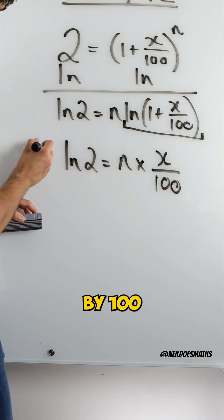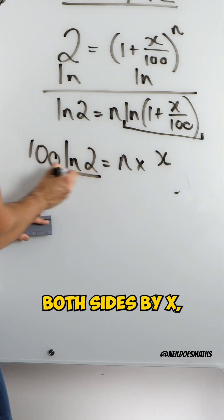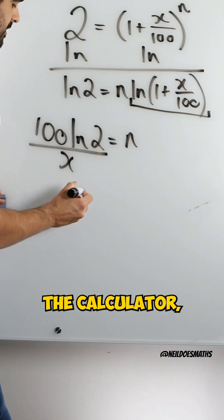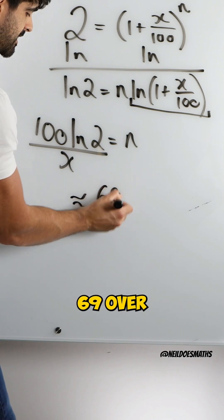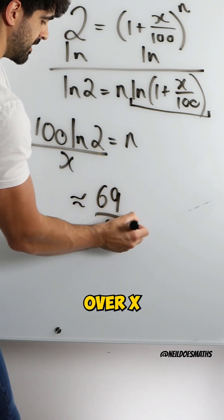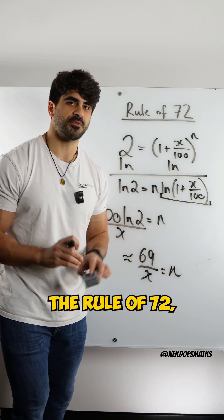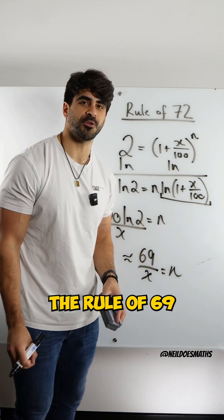Next, I'm going to multiply through by 100, and then I'm going to divide both sides by x. Now 100 ln 2, if you type that in the calculator, is approximately 69 over x equals n. Now they have agreed to go with 72, the rule of 72, but technically it should be the rule of 69.